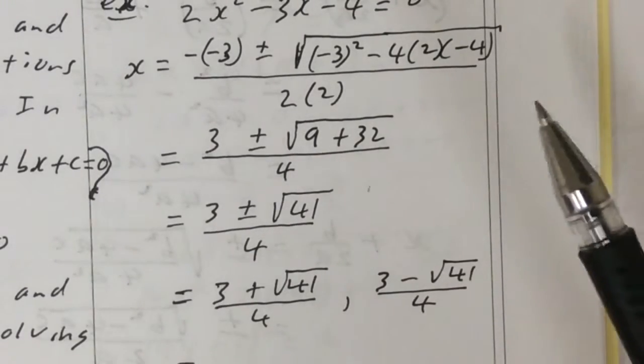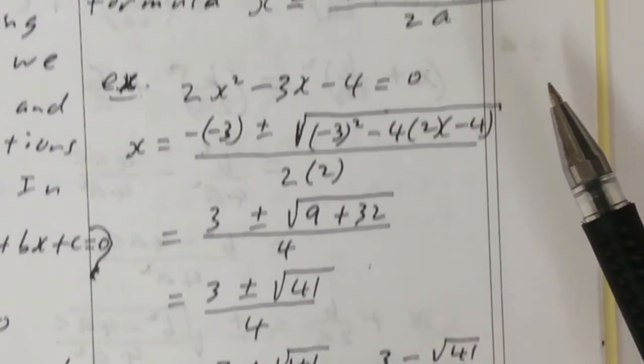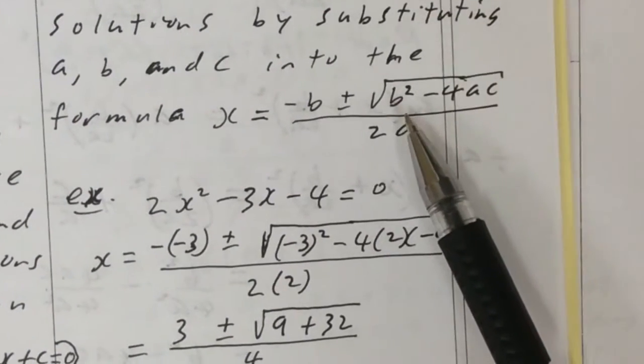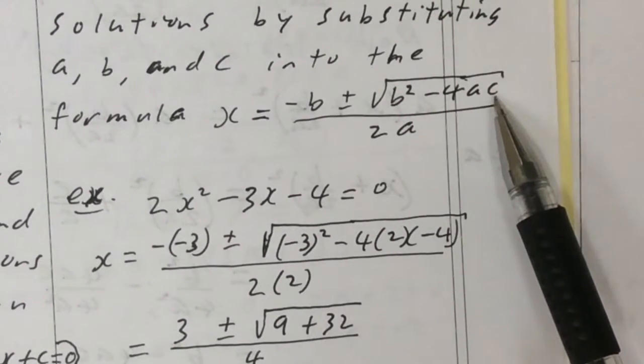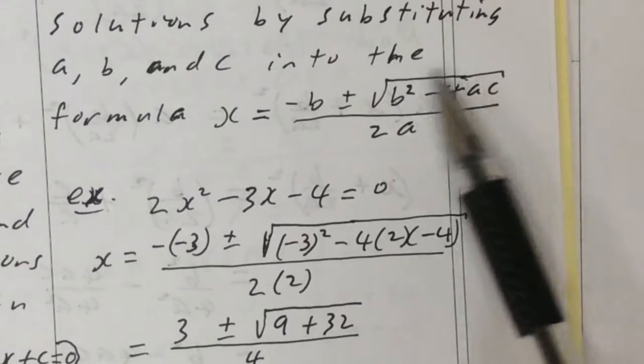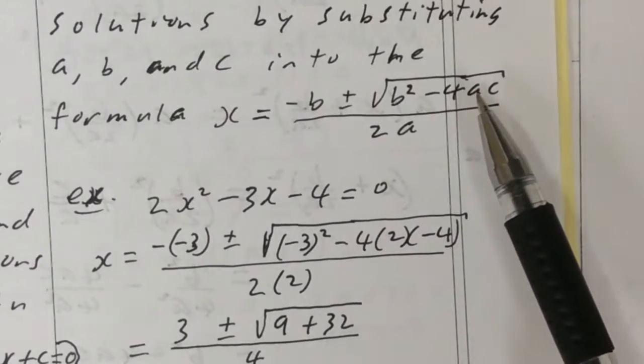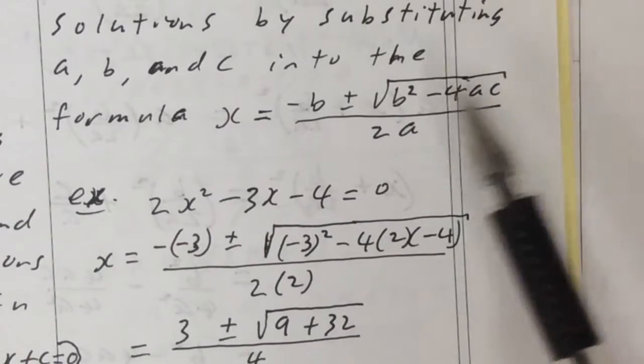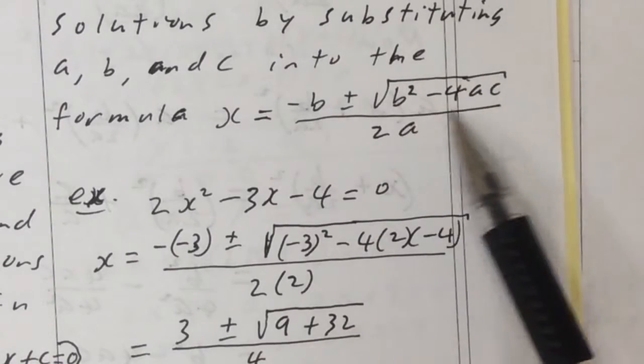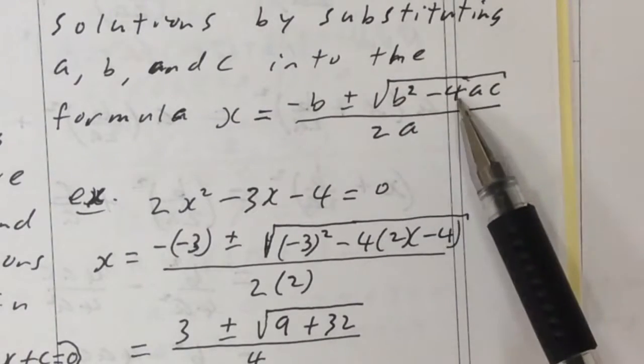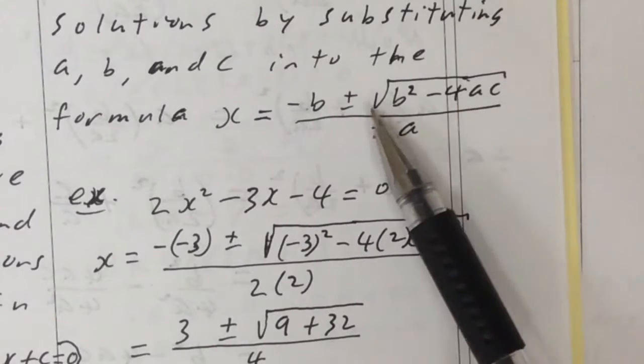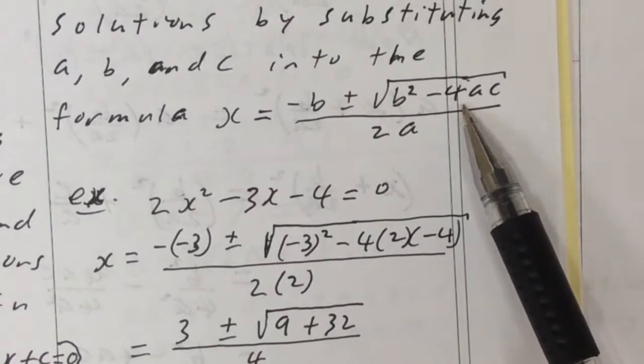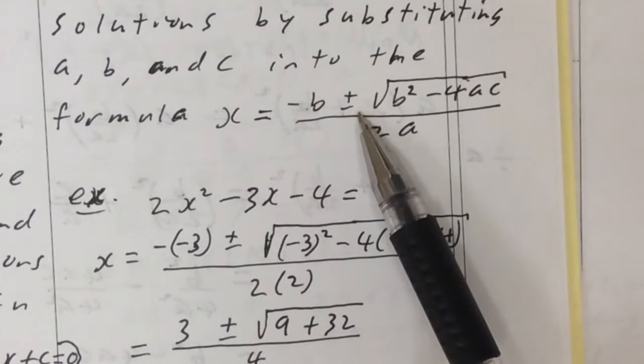So we have this portion of the quadratic formula that we call the discriminant. It's called b squared minus 4ac. This tells us a lot of information about the solutions of the quadratic equation that we're dealing with. So if b squared minus 4ac is positive, so greater than 0, then the square root is going to be a number that's greater than 0, and we will have two solutions.